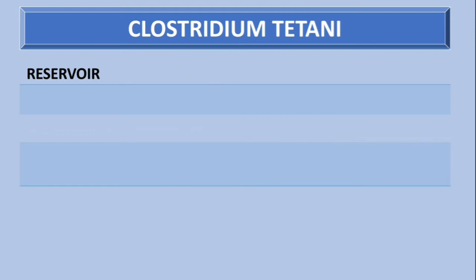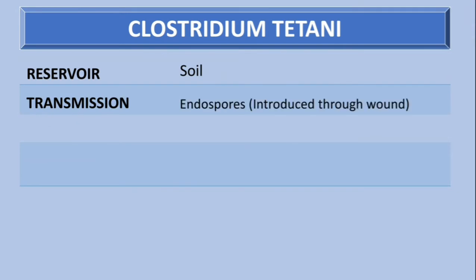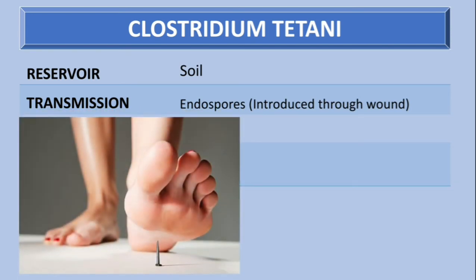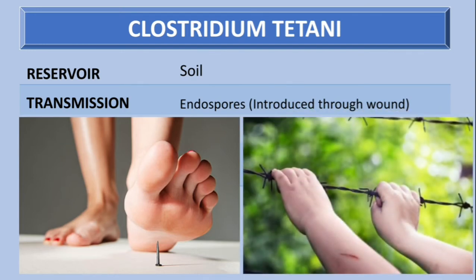How does it infect us? The method of transmission is through endospores, which are introduced into wounds. For example, if you are walking and step on a rusty nail containing the spores of Clostridium tetani, you can get the infection that way. Rusty barbed wire is another route of infection.